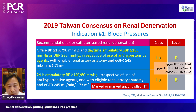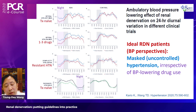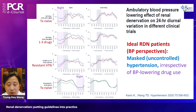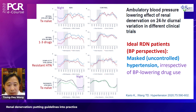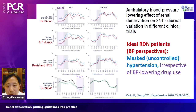Renal denervation produces year-long, potentially lifelong blood pressure reduction from a one-time procedure. Nighttime and early morning hypertension are very suitable indications because renal denervation can provide all-day blood pressure reduction. Masked and masked uncontrolled hypertension are ideal blood pressure profiles for renal denervation.